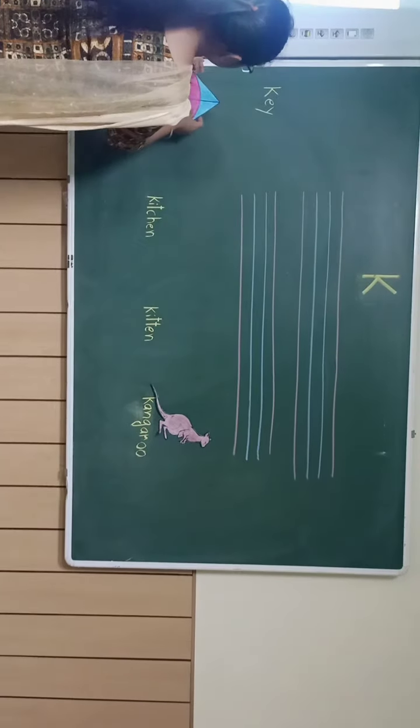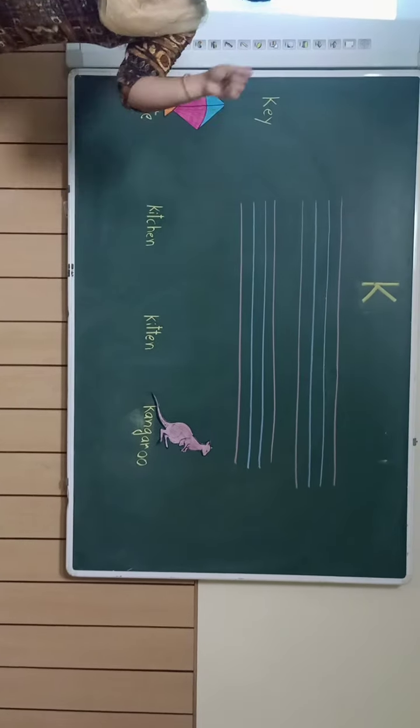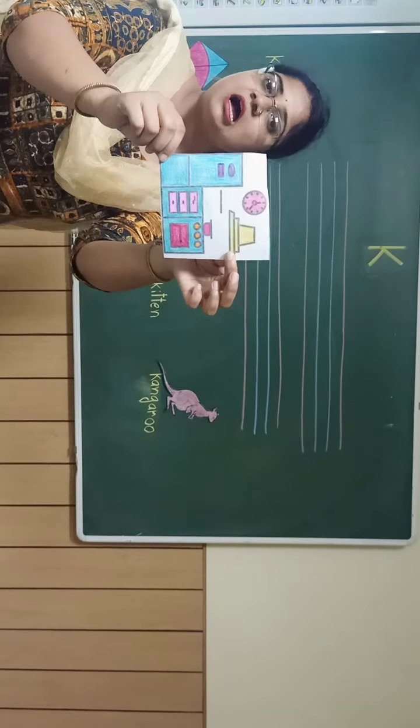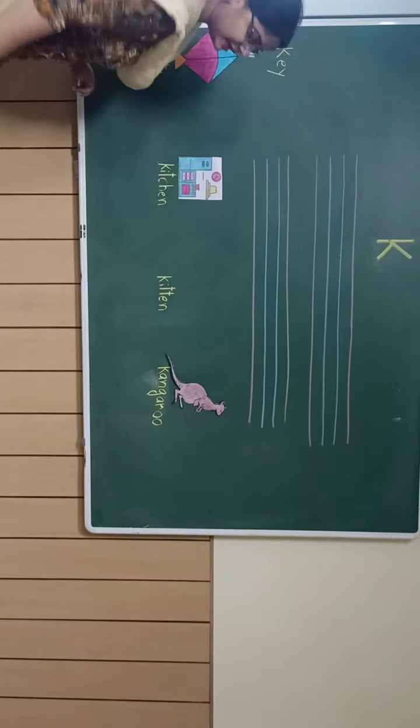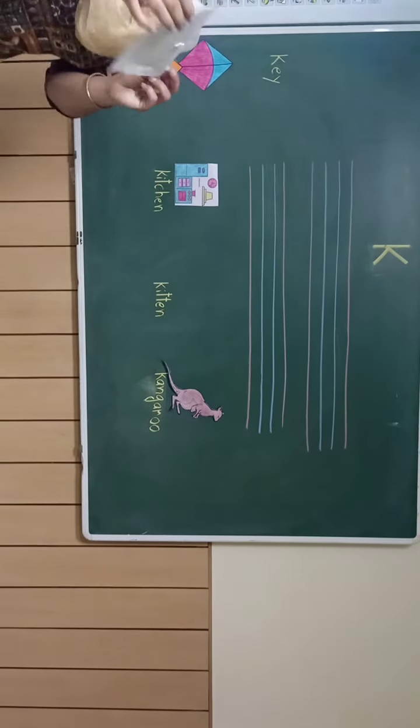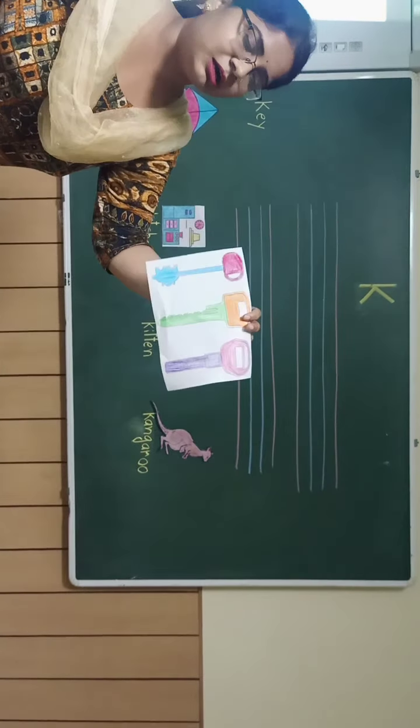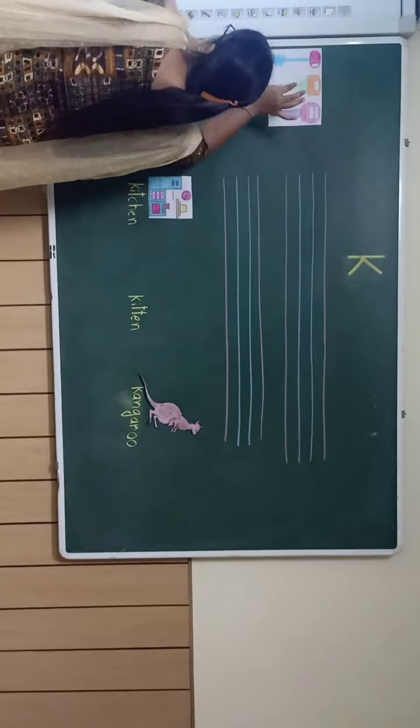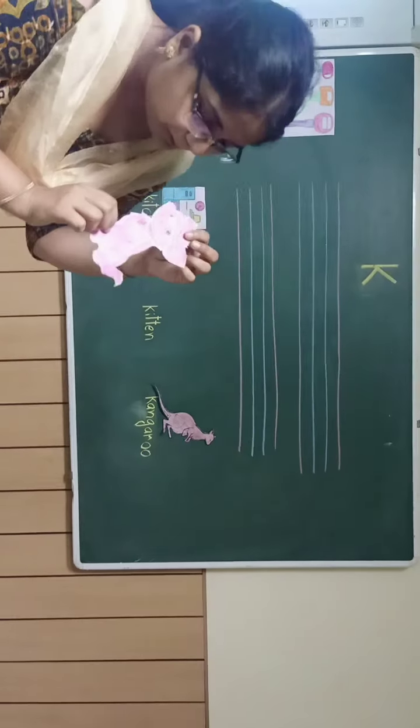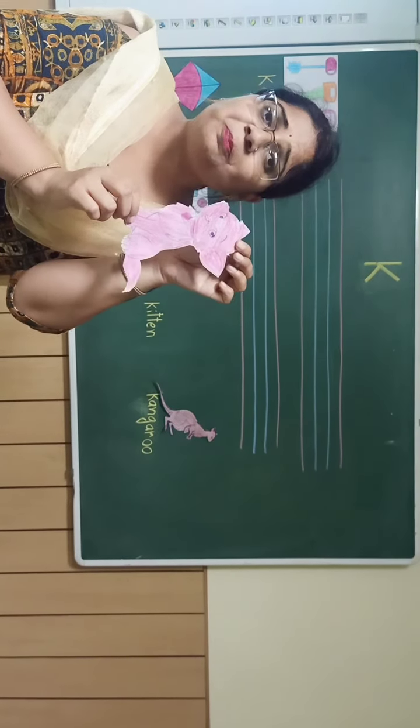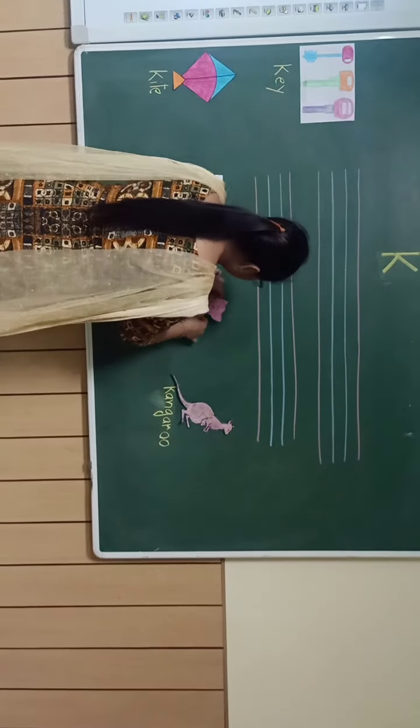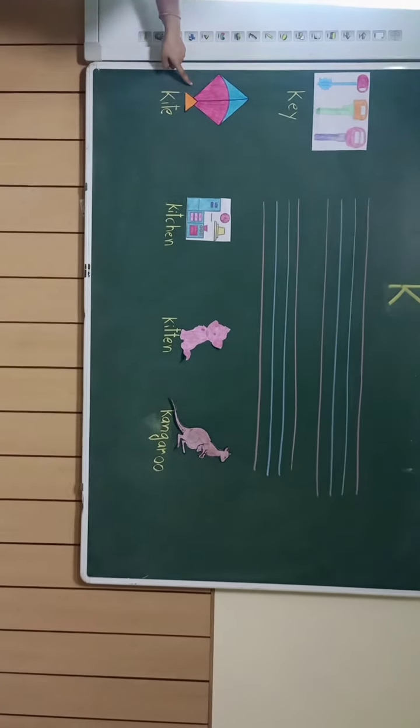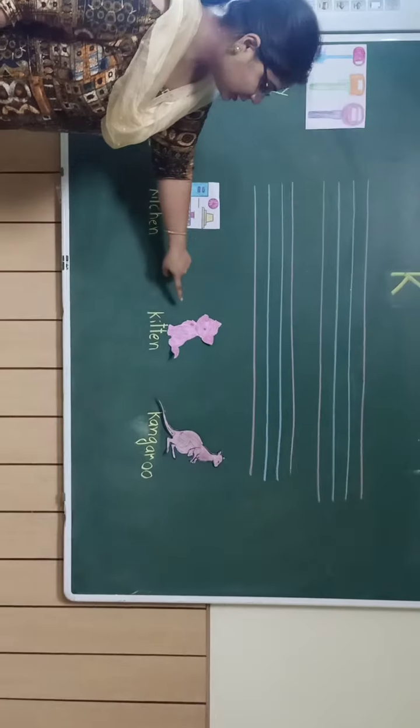Kangaroo. Do you like kite? We fly the kite in the sky. Now students, what is this? Yes, it is a kitchen. Kitchen. Now, what is this? These are keys. Keys. And I am having one more picture with me. A very small pretty pink kitten. What is it? Kitten. I am having some pictures: Key, Kite, Kitchen, Kitten, Kangaroo.